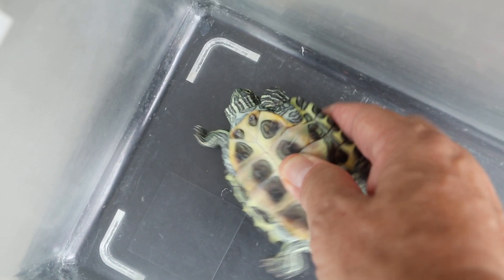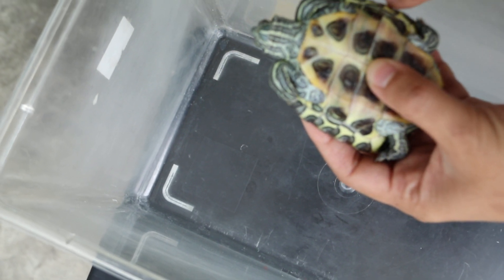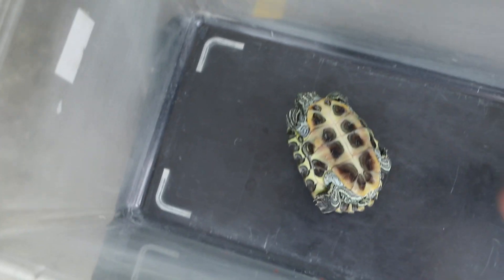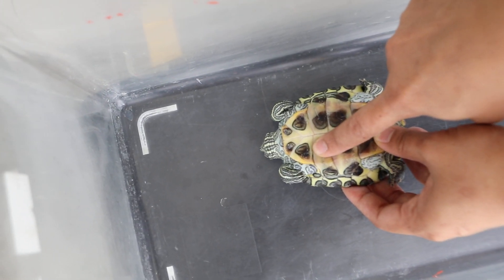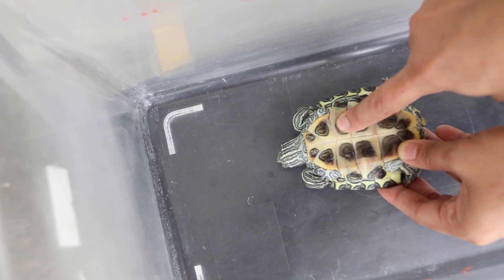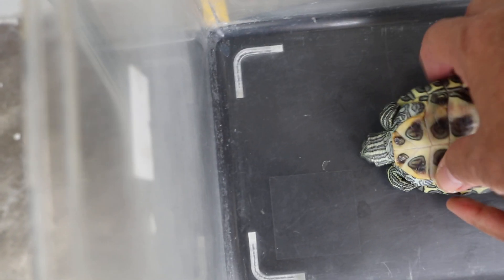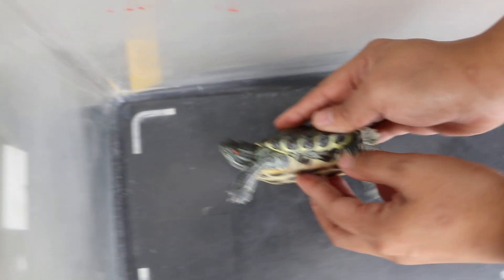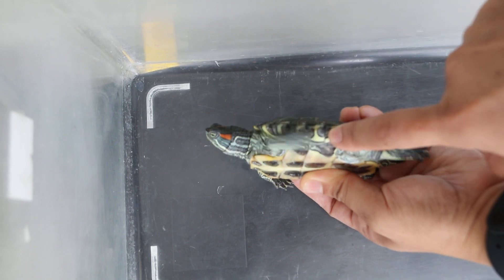But is there any shell rot below? Check and see any shell rot below. Is it soft, dented? Systematically checking each section, one by one, pressing to see if it's firm or not. Checking the sides, the bridge, turning and examining thoroughly. The bottom shell appears firm throughout.